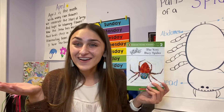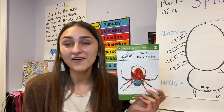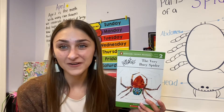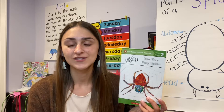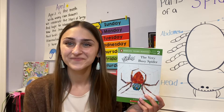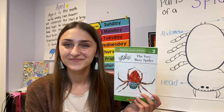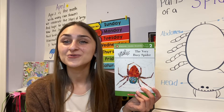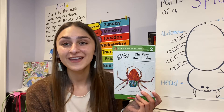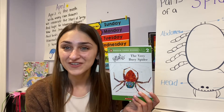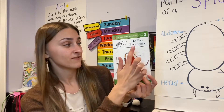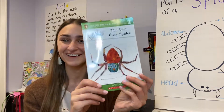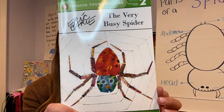What does the author do? The author writes the words. So if the author writes the words, what does an illustrator do? An illustrator draws or creates the images. So Eric Carle is the author and the illustrator of The Very Busy Spider. Let's begin reading.